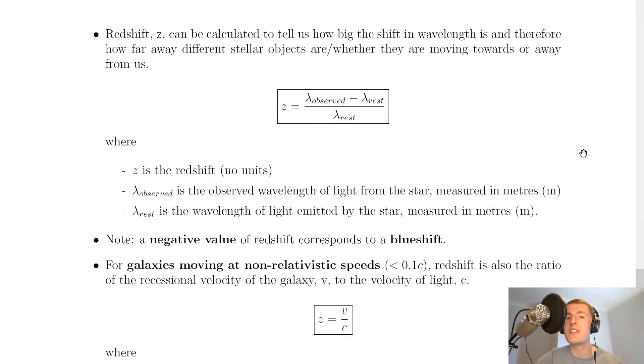Now redshift has its own symbol, and it's given the symbol of small z. Redshift z can be calculated to tell us how big the shift in wavelength is, or frequency, and therefore how far away different stellar objects are, or whether they are moving towards or away from us. So we're going to see that it depends on the sign of z as to whether an object is moving away or towards us.